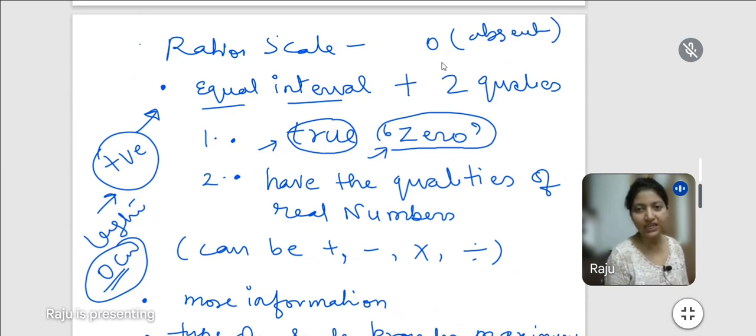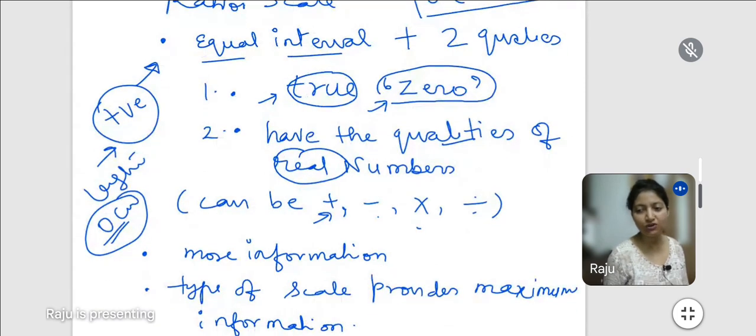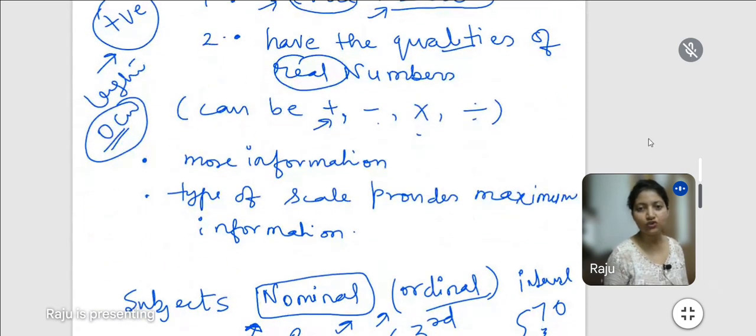So, in this way, the data will go ratio scale. This is a very important point that the numbers are real numbers and we can add or subtract or multiply, and those numbers because these are real numbers can also be divided. And the ratio scale